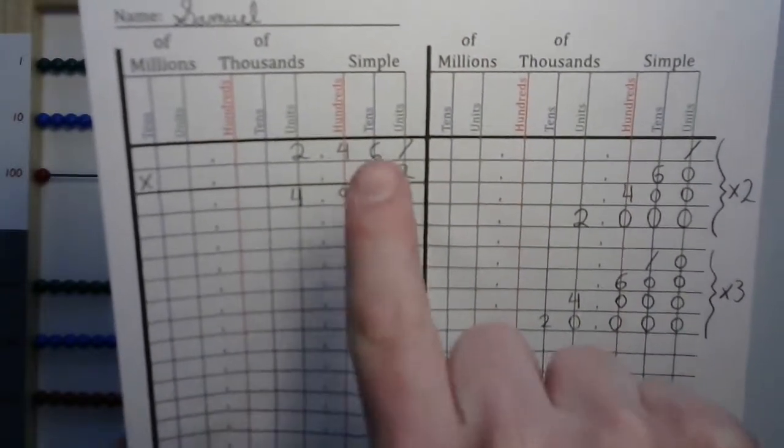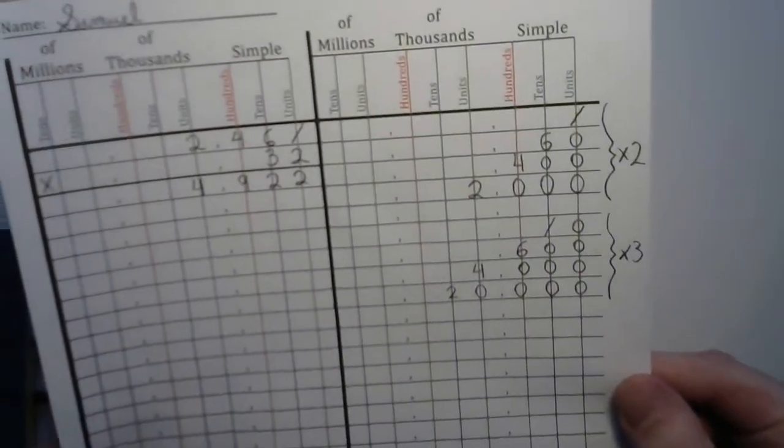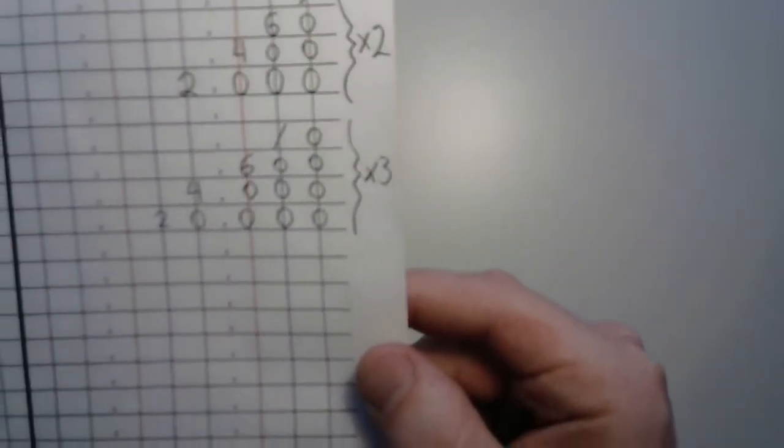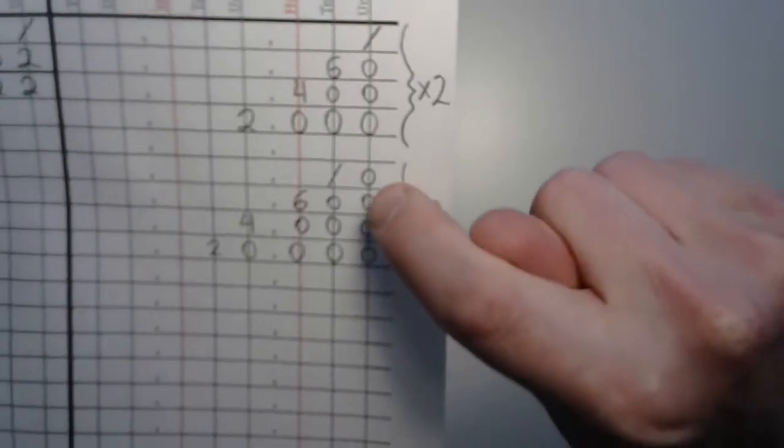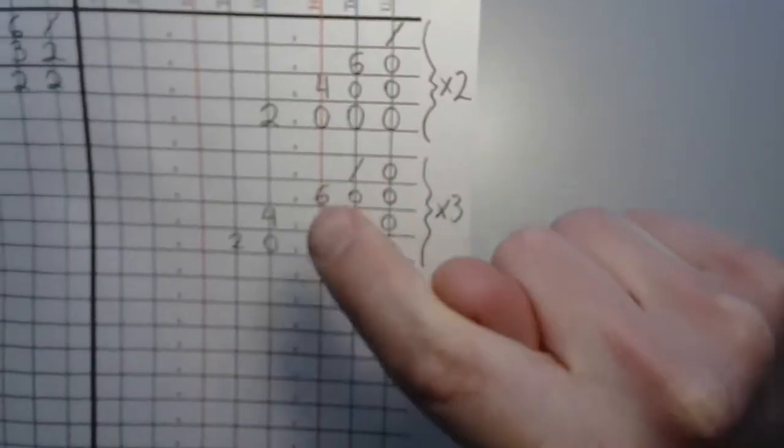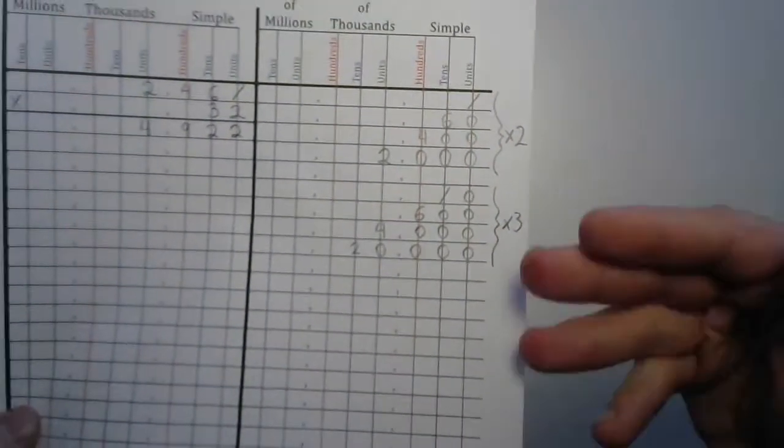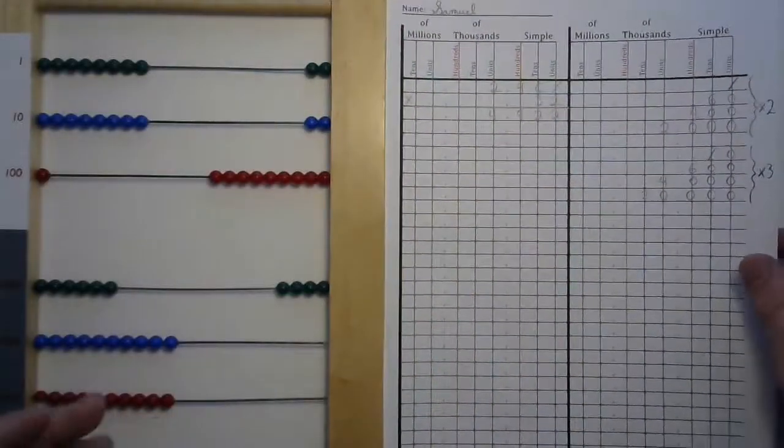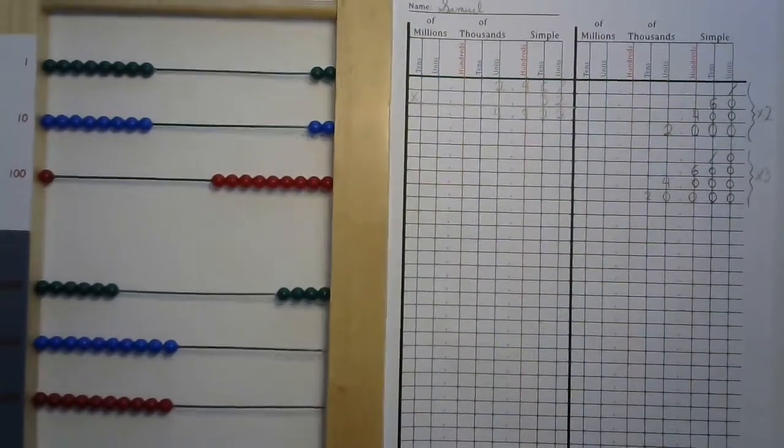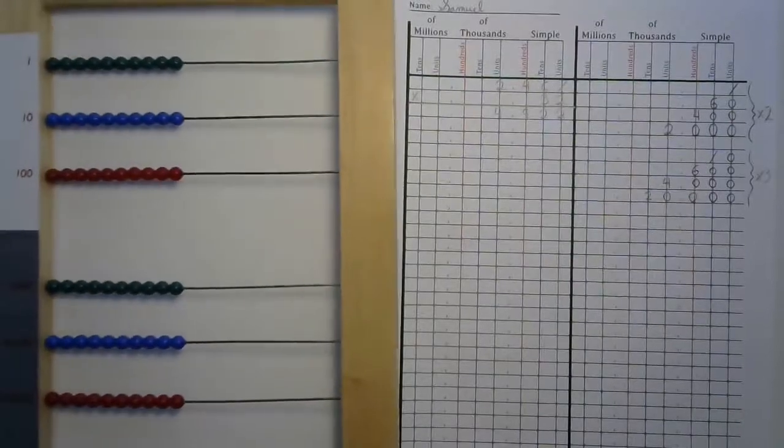Now it's time to work on that tens digit. Now look at your decomposition. We're not going to be starting on our units wire. We're going to start on our tens wire. Remember, we're now doing the tens digit. So now that you have this recorded, go ahead and reset and get ready.